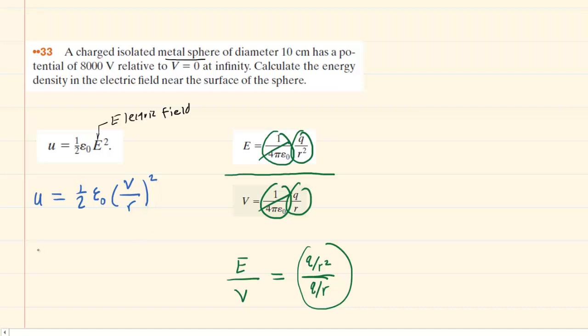We know that this constant epsilon naught has a value of 8.85 times 10 to the minus 12, and it has units of coulombs squared over newton meters squared. We're going to clean up the workspace here.